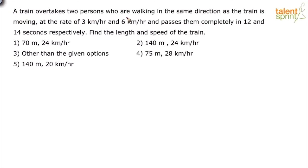A train overtakes two persons who are walking in the same direction as the train is moving at the rate of 3 km per hour and 6 km per hour and passes them completely in 12 and 14 seconds respectively.